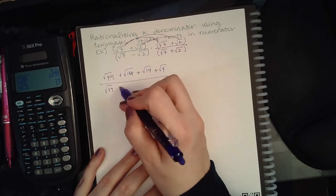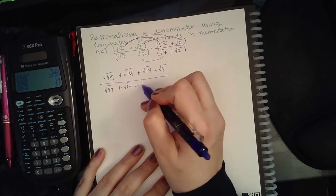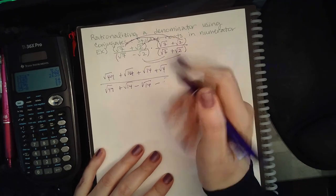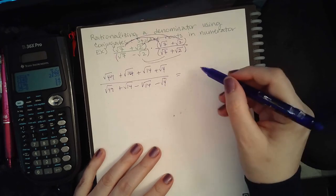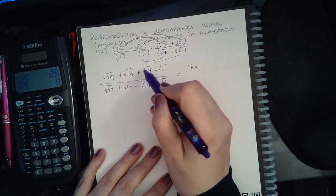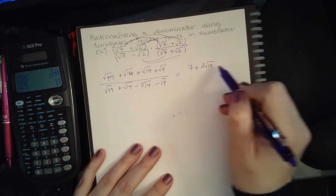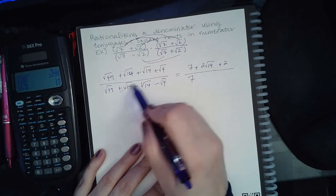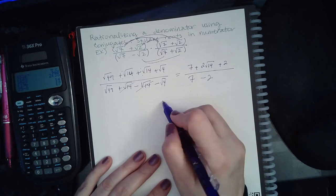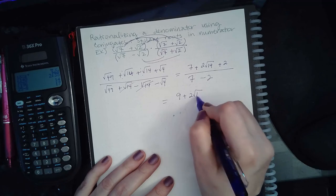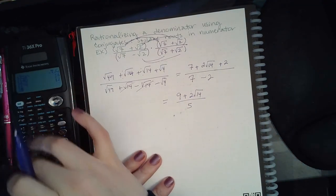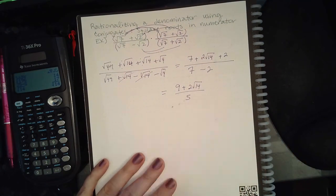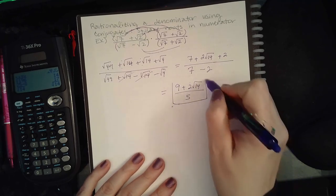At the bottom: square root of 49, plus square root of 14, minus square root of 14, and minus square root of 4. The top simplifies: square root of 49 is 7, the two square root of 14 terms combine to 2 square root of 14, and square root of 4 is 2. The bottom: 7 and the square root of 14 terms cancel, leaving 7 minus 2, which is 5. The square root of 14 does not simplify, and 9, 2, and 5 share no common factor, so this is the final answer.